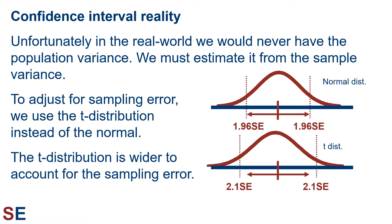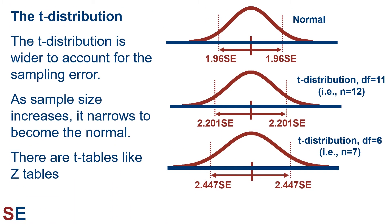The t distribution is wider to account for the sampling error and the underestimate of the population variance. As shown in the figure, the middle 95% of the t distribution will result in a slightly larger confidence interval than if we were able to use the normal distribution. The t distribution is wider to account for the sampling error, but as the sample size increases, it narrows to become the normal distribution. Because the imprecision due to sampling error depends on the sample size, there is a different t distribution for each sample size, otherwise known as degrees of freedom.